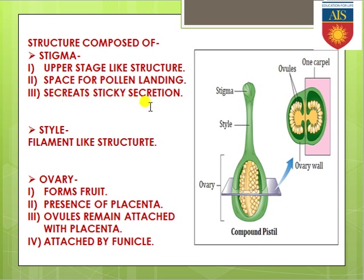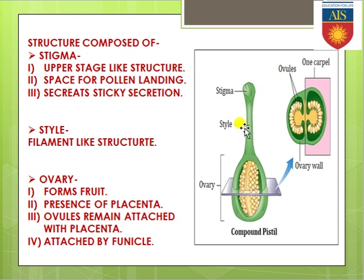Keep it in mind that on the surface of the stigma, a sticky secretion is always present so that the pollen grain coming on the surface can adhere properly. Style is the filament-like structure — just under the stigma — through which the pollen tube can run or proceed during pollination. Style also holds the stigma portion.